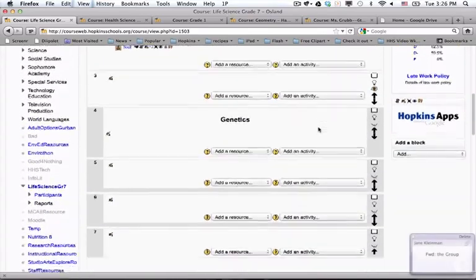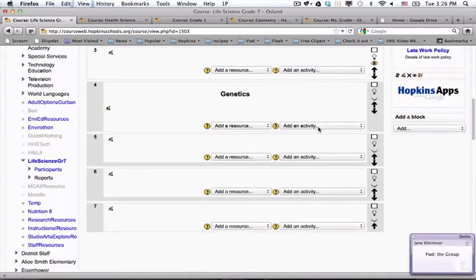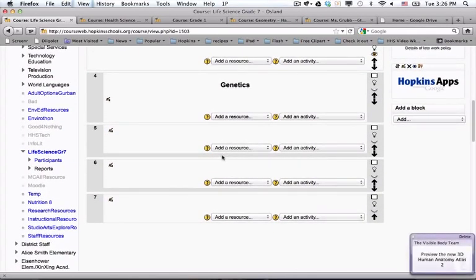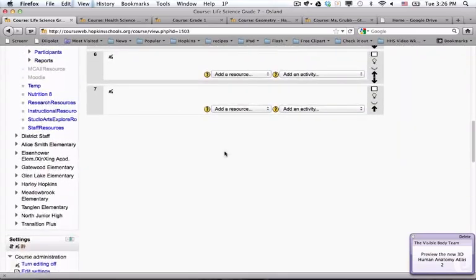What if you don't need as many blocks as you've been provided? There's 10 there by default. I have seven. I think I removed some. Let me just show you how you get rid of extra blocks.